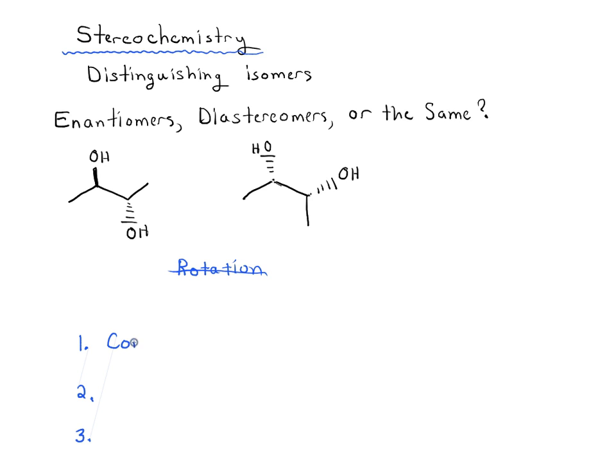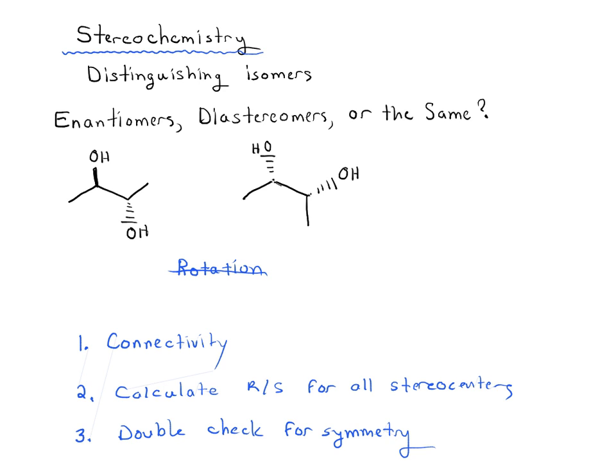Number one is we want to check for connectivity. You also want to then calculate or figure out RS for all stereocenters, and then you also want to double check for symmetry. So three steps in being able to distinguish whether these two molecules are enantiomers, diastereomers, or the same.